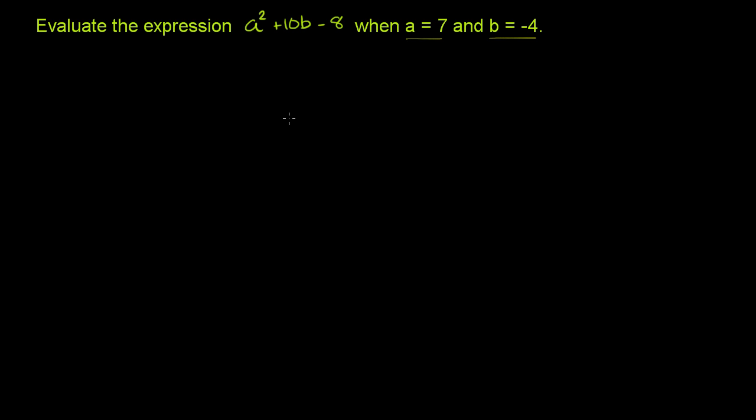So to evaluate the expression, we really just have to substitute a with 7 and substitute b with negative 4, because they're saying evaluate it when a is equal to 7 and b is equal to negative 4. So let's do that.